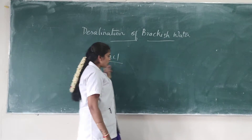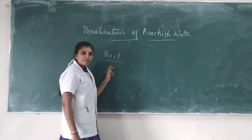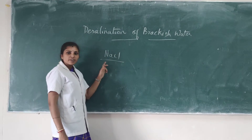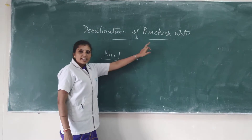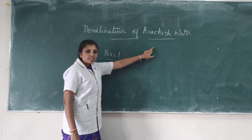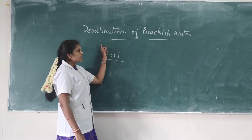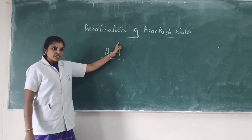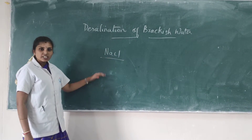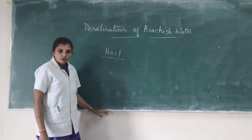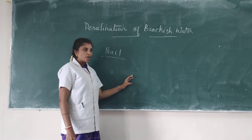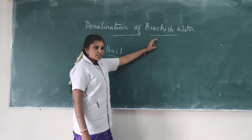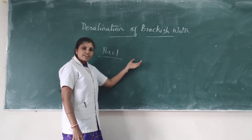The removal of the common salt content from brackish water is called the desalination method. Generally, we have categories of water: fresh water, brackish water, and sea water.